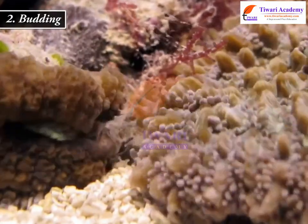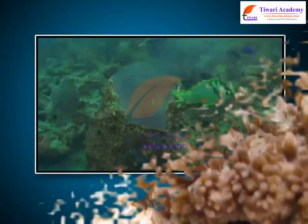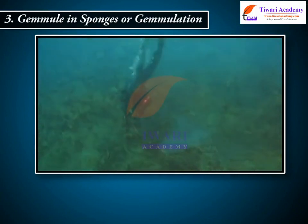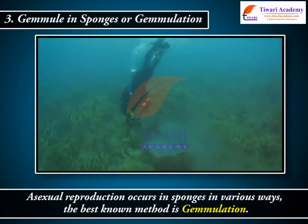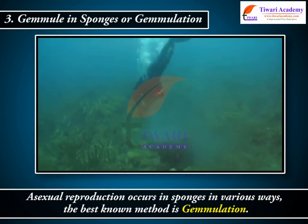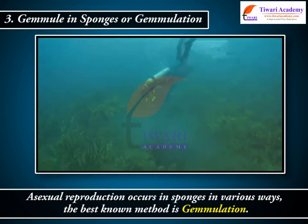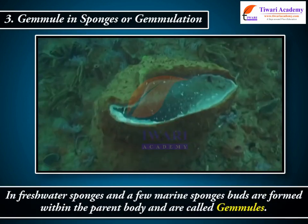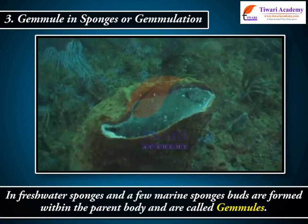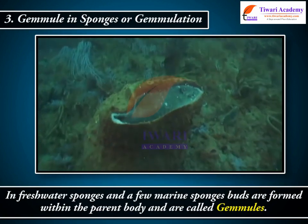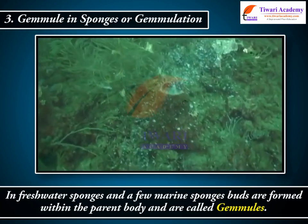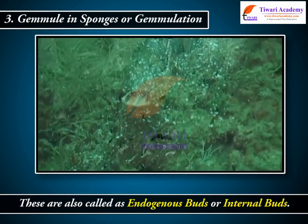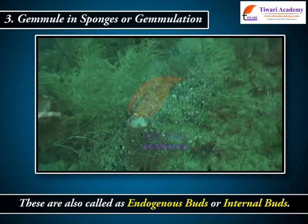The mechanism is different in corals — their buds do not detach from the parent body, leading to the formation of large colonies. Gemmulation in sponges: asexual reproduction occurs in sponges in various ways. The best known method is gemmulation. In freshwater sponges and a few marine sponges, buds are formed within the parent body and are called gemmules, also known as endogenous or internal buds.